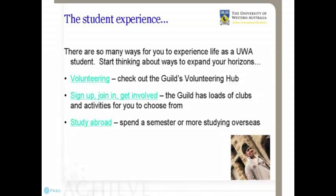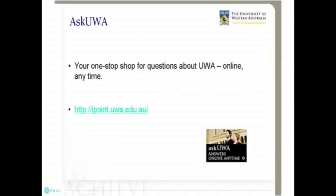So after orientation, what should I do if I still need help or support? Well, there are many places to ask for help at uni. You can sign up for the uni mentor scheme during enrolment or orientation. You can drop into a faculty student office. You can ask your tutors or pop into student services. But if you're not sure where to start, a good place to begin with is Ask UWA online anytime. If you can't find the answer there, you can ask a question on that site and it will get referred to the right place to answer it.